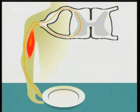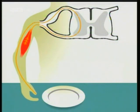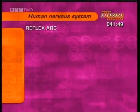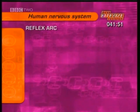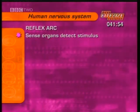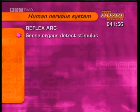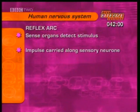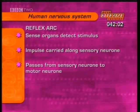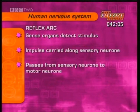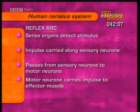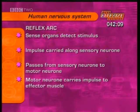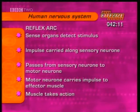Remember, all this happens very quickly. It's quite automatic and no decision making is involved, because the reflex arc does not involve the brain. To summarise the reflex arc: sense organs detect stimulus; impulse carried along sensory neuron, which passes from sensory neuron via relay neuron to motor neuron; motor neuron carries the impulse to effector muscle; effector muscle then takes action.